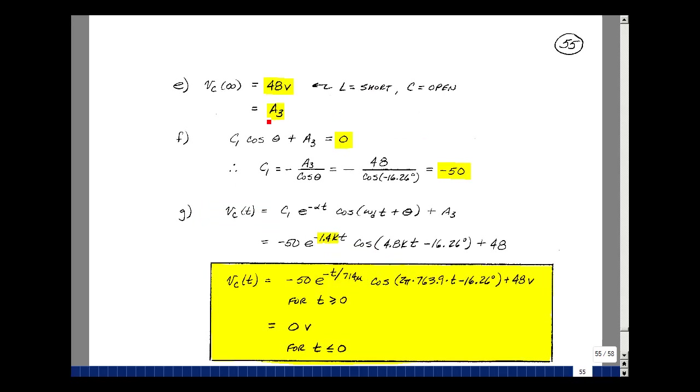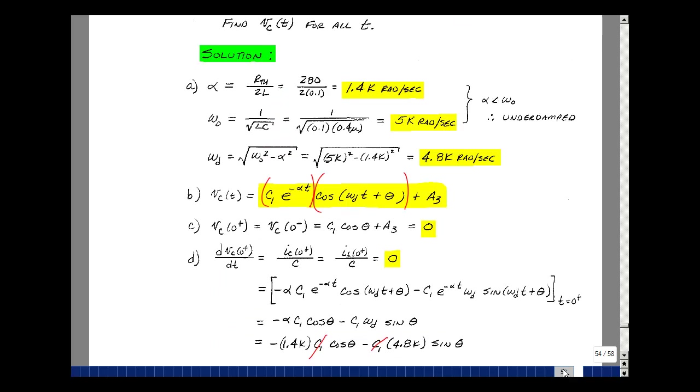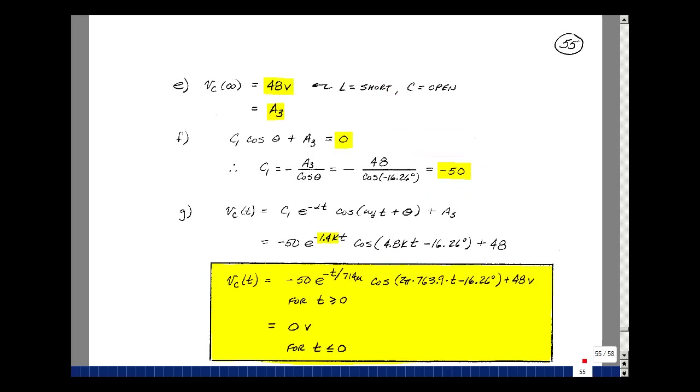The value, if we wait long enough, is equal to 48 volts. Let's go back and look at our equation. So as t approaches infinity, this term gets smaller and smaller, and all we're left with is just A3. The value of A3, then, is equal to 48 volts. Go back to our first equation, C1 cosine of theta plus A3 is equal to 0. We can now solve for C1. So minus A3 divided by the cosine of theta, 48 cosine of minus 16.26 degrees, get minus 50.